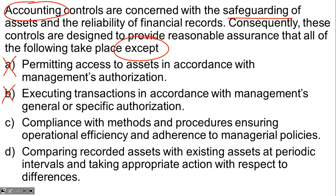The question is whether operational efficiency and adherence to managerial policies fall under accounting controls specifically. We'll put a question mark on choice C — maybe that's the answer. Choice D: comparing recorded assets with existing assets at periodic intervals and taking appropriate action with respect to differences. That is very clearly part of safeguarding assets and ensuring those assets are protected.